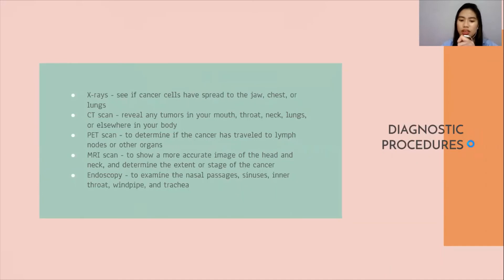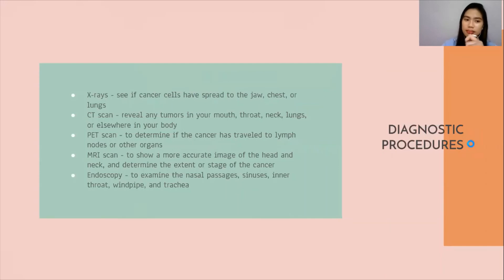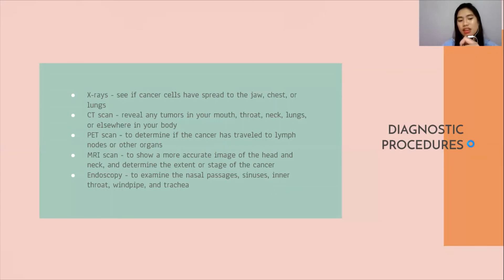For diagnostic procedures, the doctor or dentist will first perform a physical exam, and if suspicious lesions are found, a brush biopsy or tissue biopsy is performed. X-rays are used to see if cancer cells have spread to the jaw, chest, or lungs. A CT scan reveals any tumors in the mouth, throat, neck, or lungs. A PET scan determines if cancer has traveled to lymph nodes or other organs. An MRI scan shows a more accurate image of the head and neck to determine the stage of cancer. Endoscopy examines the nasal passages, sinuses, throat, windpipe, and trachea.